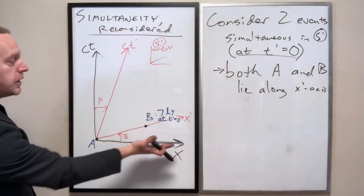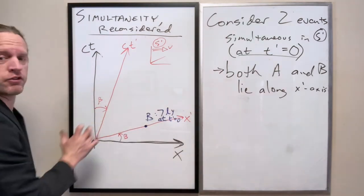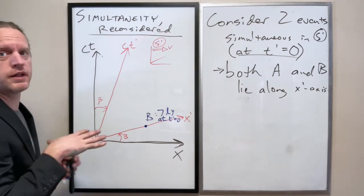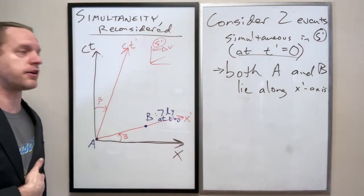And then the way that we've already been shown how to draw that x prime axis here naturally shows, I think graphically, why those two events will not be seen simultaneous in not only s, but in literally any other frame.